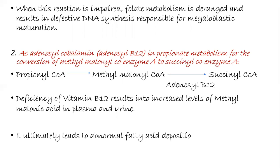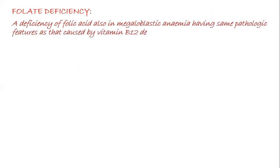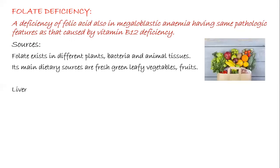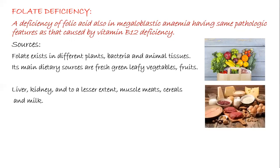Now we'll see about folate deficiency. A deficiency of folic acid also results in megaloblastic anemia and has the same pathological features as that caused by vitamin B12 deficiency. The sources of folic acid are it is present in different plants, bacteria, and animal tissues. Its main dietary sources are fresh green leafy vegetables and fruits, liver, kidney, and to a lesser extent muscle meat, cereals, and milk. They are also rich in folic acid. The average daily requirement is almost about 100 to 200 micrograms.